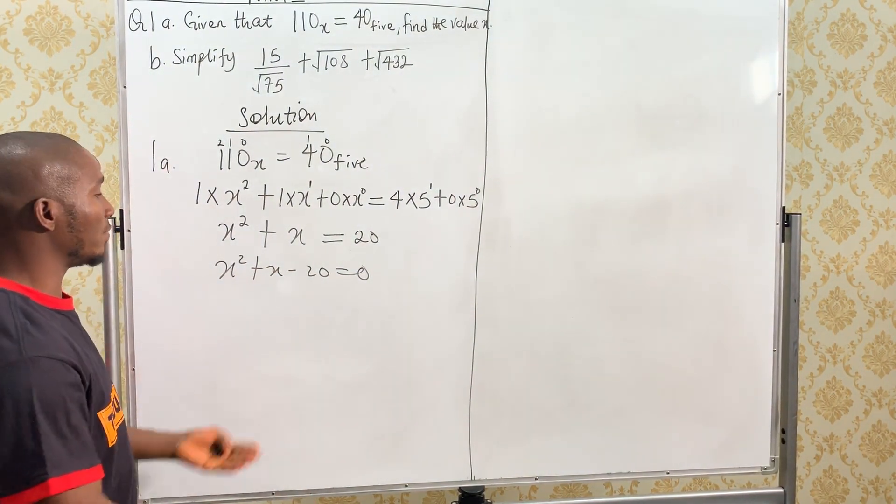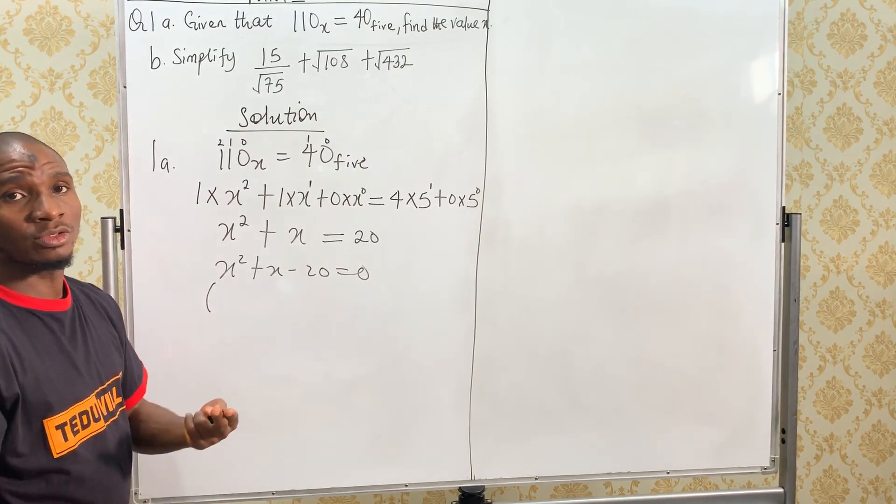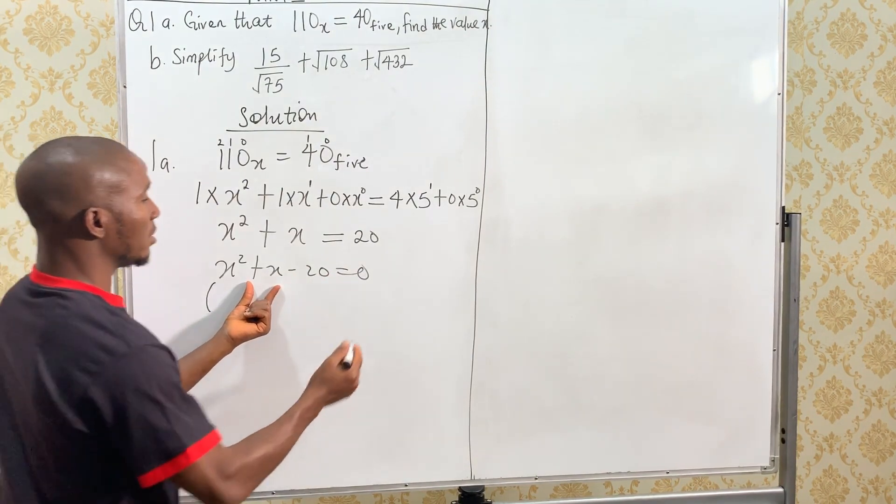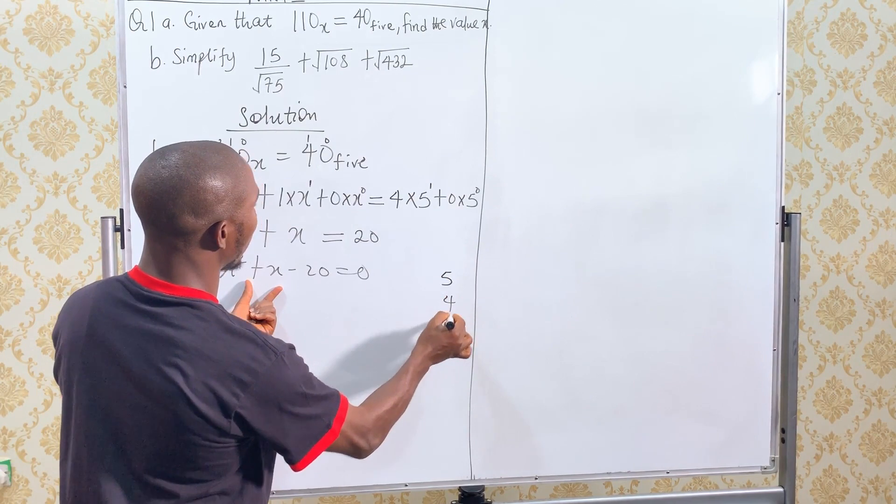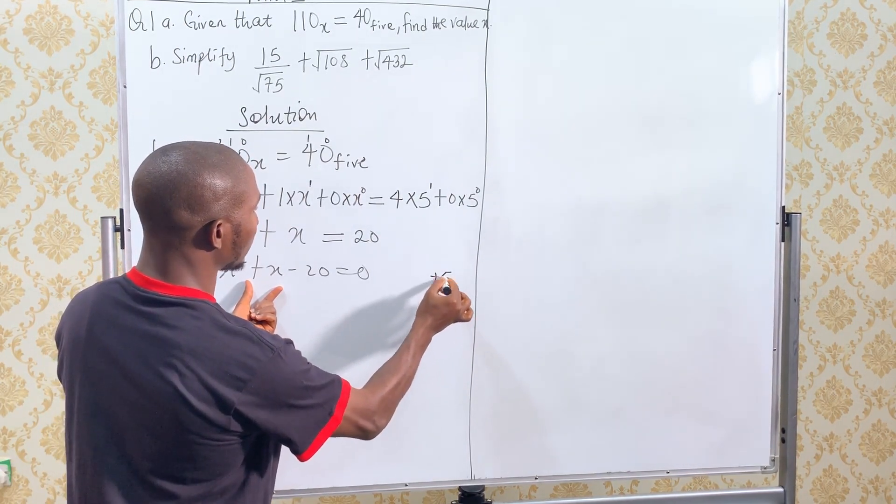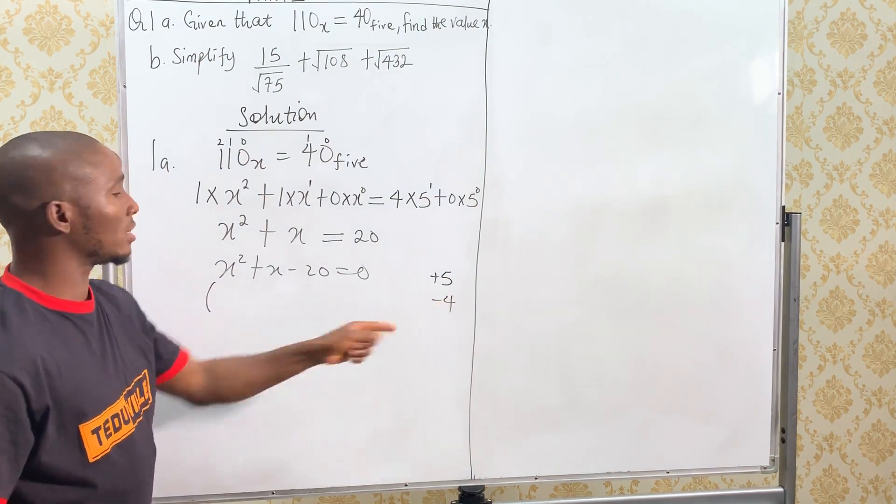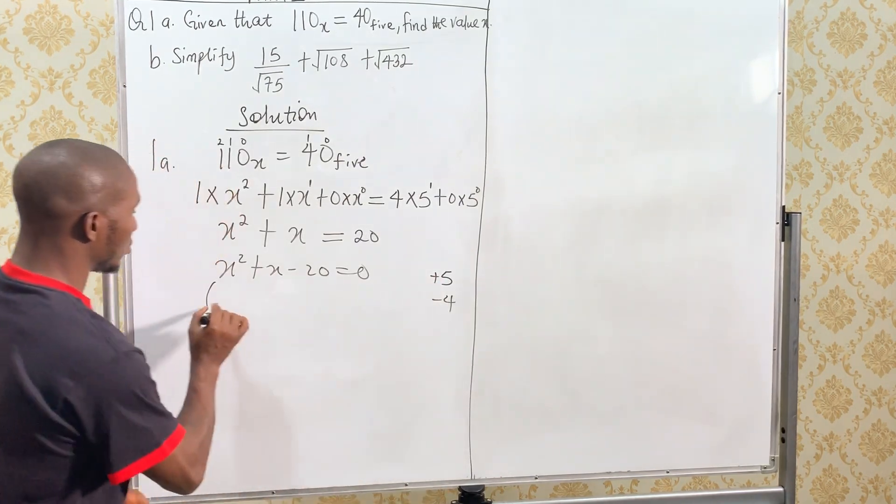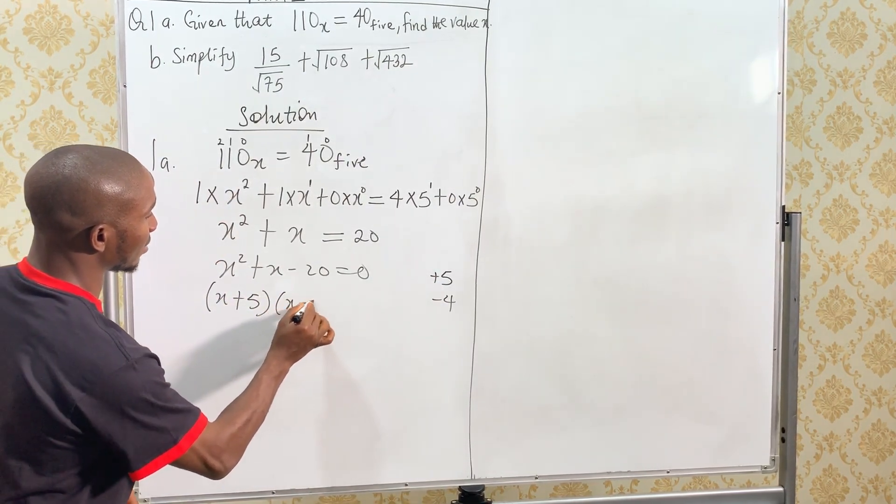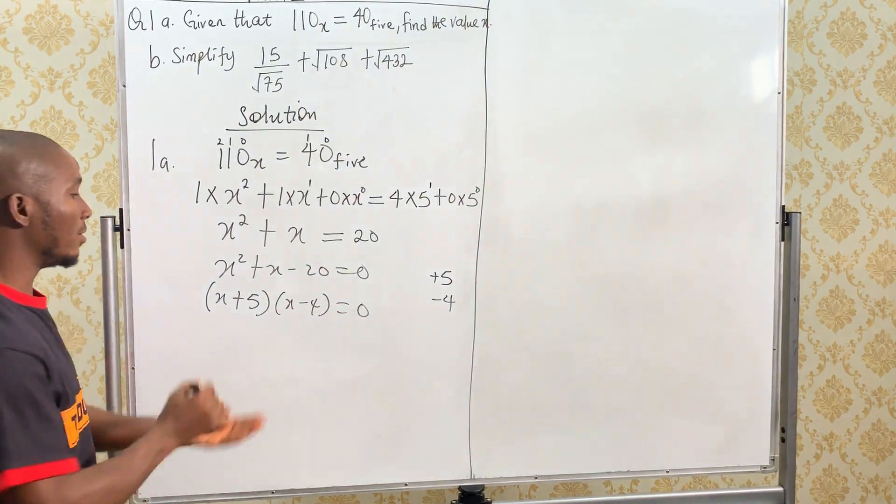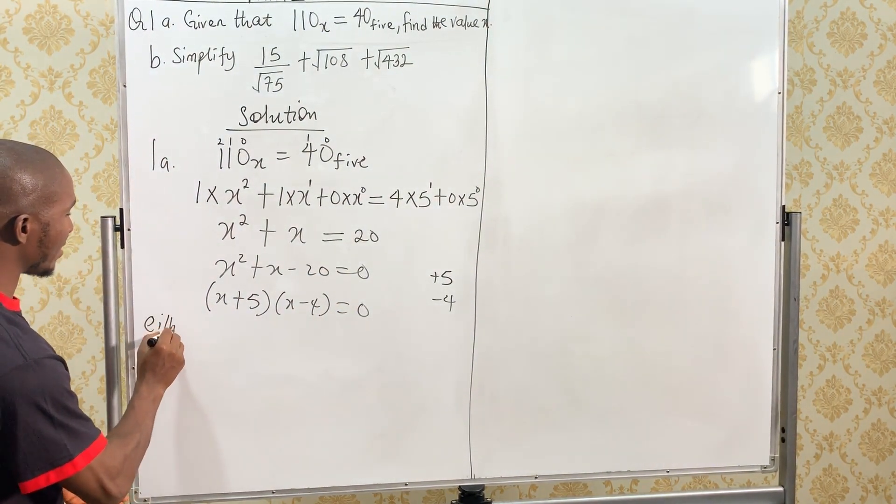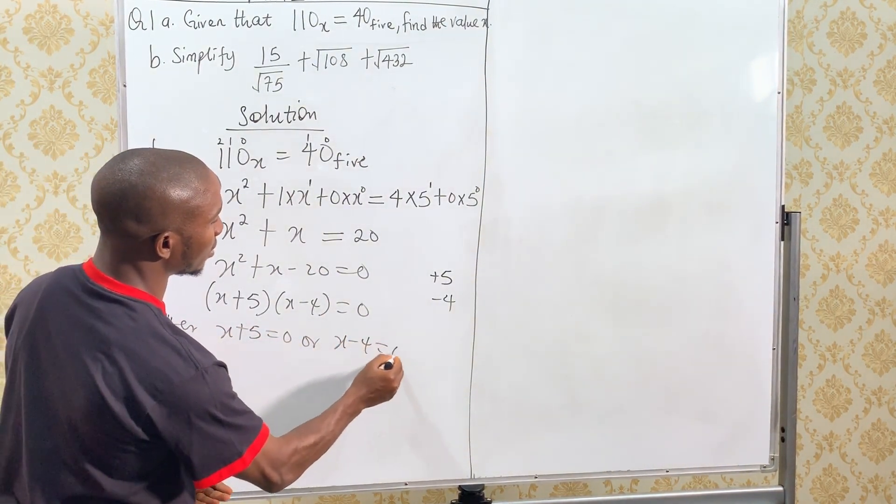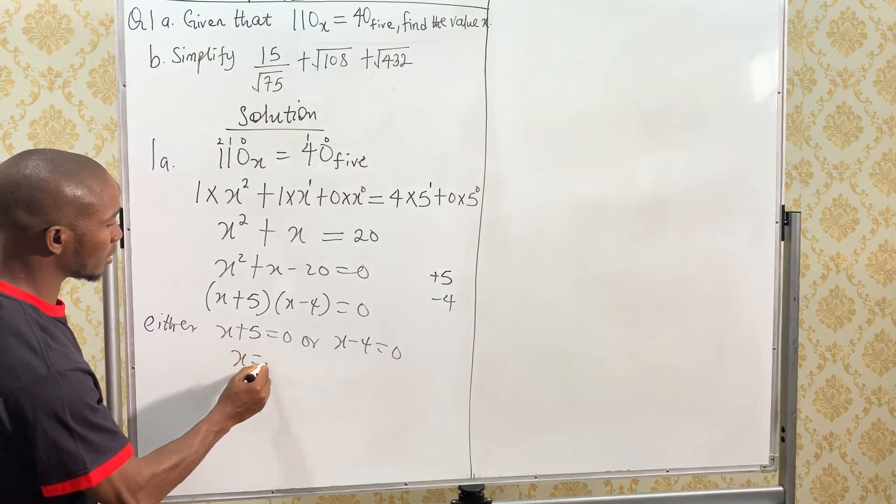This can be factorized to get the value of X. You take two values that when you multiply, you get minus 20, and when you add, you have plus 1. Now, two values to multiply will be 5 and 4. Plus 5 and minus 4. If you add them, you are going to get 1, which is X, and if you multiply them, you are going to get minus 20. So, we say X plus 5 and X minus 4 equals 0. Now, we now have either X plus 5 equals to 0, or X minus 4 equals to 0. Then,